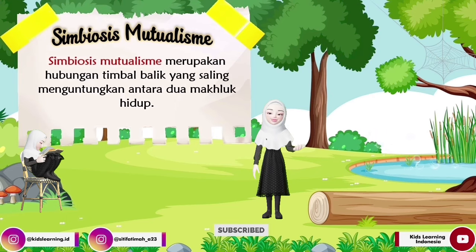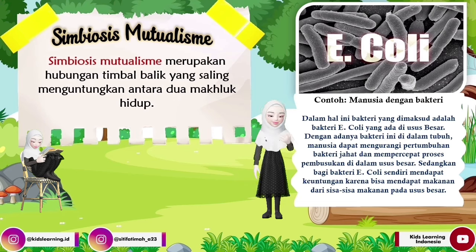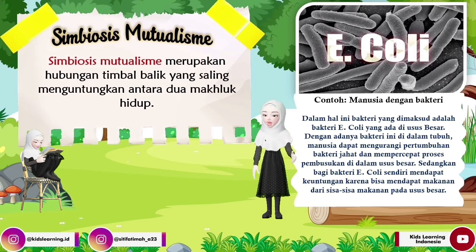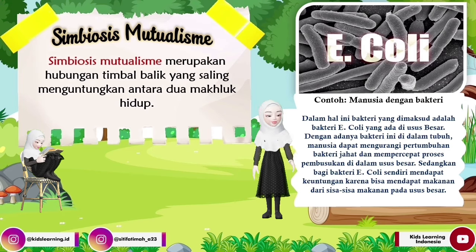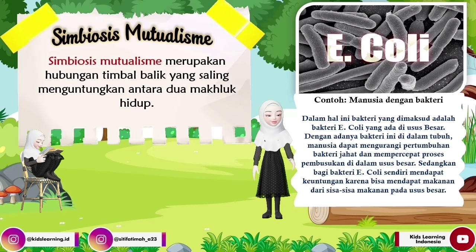Contoh yang ketiga yaitu manusia dengan bakteri. Bakteri yang dimaksud adalah bakteri E. coli yang ada di usus besar manusia. Dengan adanya bakteri ini di dalam tubuh manusia, manusia dapat mengurangi pertumbuhan bakteri jahat dan mempercepat proses pembusukan di dalam usus besar. Sedangkan bakteri E. coli sendiri mendapatkan keuntungan karena bisa mendapat makanan dari sisa-sisa makanan pada usus besar manusia.